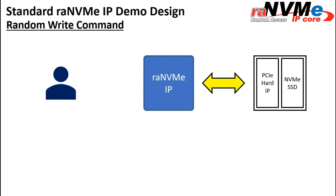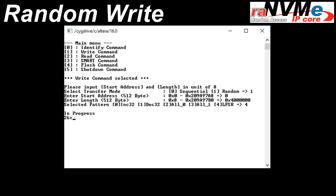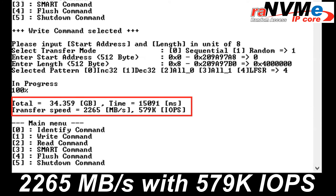For the user interface of RANVMe IP, the CPU will send the command to write the first 4KB data with the start address, then the data will be written to the SSD. After that, the process is repeated with any other 4KB aligned address calculated by firmware until all the data is transmitted completely. The transfer speed for transmitting data with RANVMe IP standard design is 2265 MB/s with 579K IOPS.